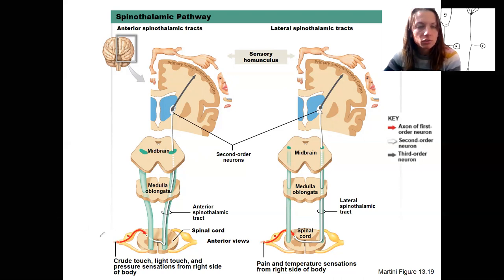Information from the right side of the body is going to travel across the spinal cord, contralateral, and it's going to travel up to the left primary somatosensory cortex. Same thing with the lateral spinothalamic tract. Anterior and lateral refer to where the tracts are in the spinal cord.